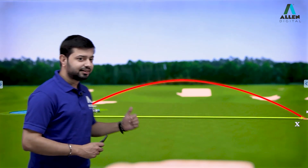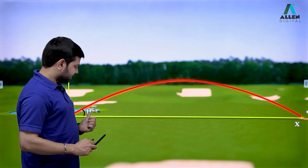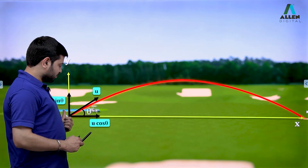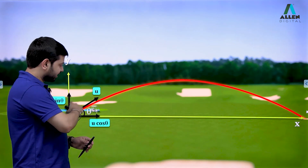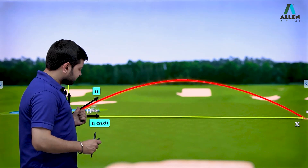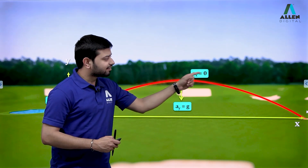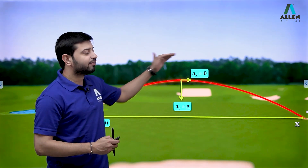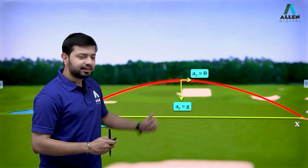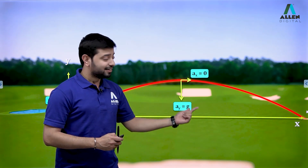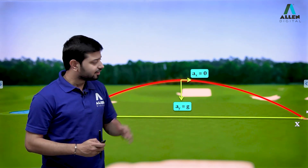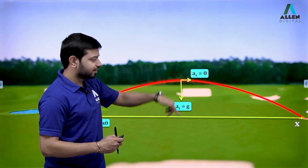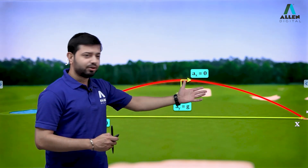Taking the horizontal direction as X and the vertical direction as Y, the initial angle of projection is theta. The horizontal speed is u cos theta and the vertical speed is u sin theta, where u is the initial speed. At all times, an acceleration component acts on the particle. In the vertical direction, acceleration is g downward, but there is no acceleration in the horizontal direction.